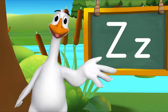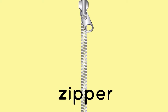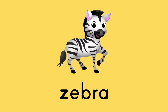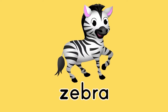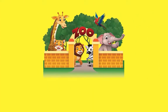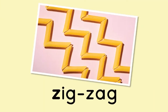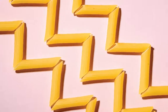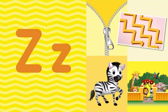Here are more things that begin with Z: Zipper! Zebra! Zoo! Zig-zag! What letter do all these words start with? Z! That's right, the letter Z!